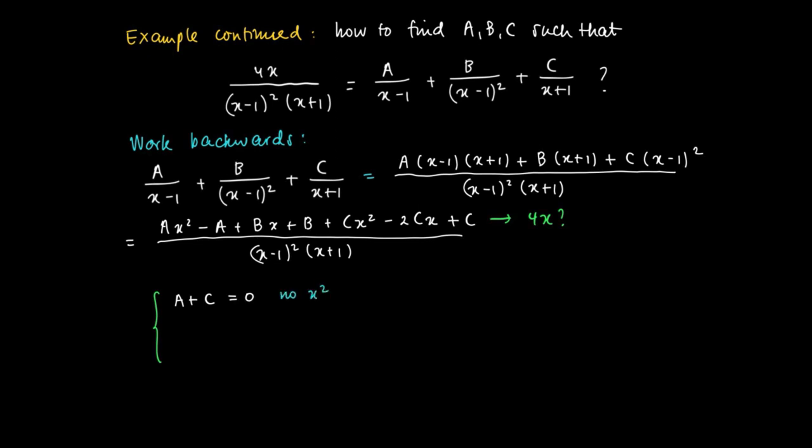And there's no x² in the original numerator, since this equals 4x. So b times x minus 2c times x should be equal to 4 times x. So b minus 2c should be equal to 4.